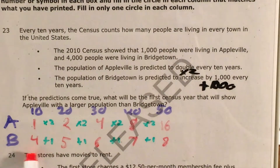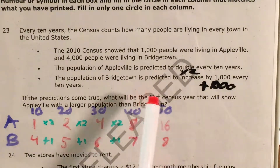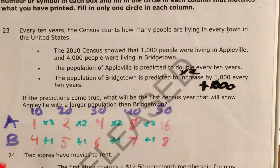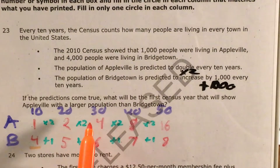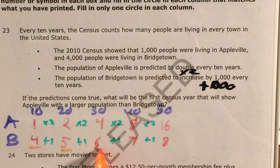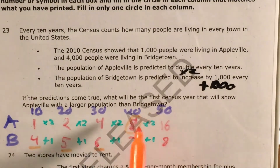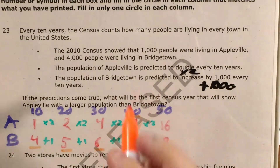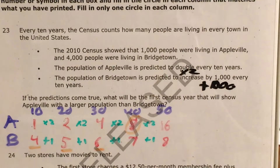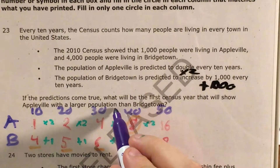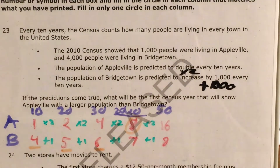So now, if these predictions are coming true and all this data is what actually happens, we're figuring out the first census year that will show Appleville with a larger population than Bridgetown. In 2010, 1,000 to 4,000 — Bridgetown takes it. In 2020, 2,000 to 5,000 — Bridgetown. In 2030, 4,000 to 6,000 — still Bridgetown. But in 2040, Appleville's population actually takes over Bridgetown's, which means the answer for the first census year that will show Appleville with a larger population than Bridgetown is 2040.